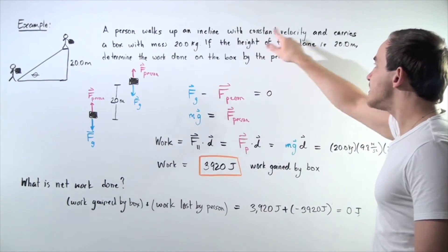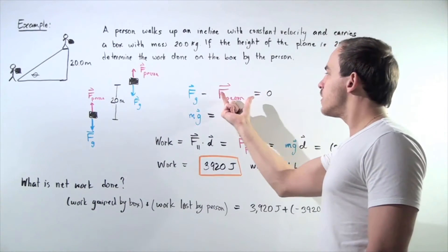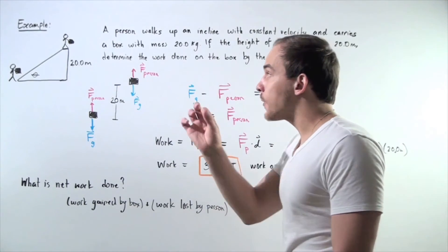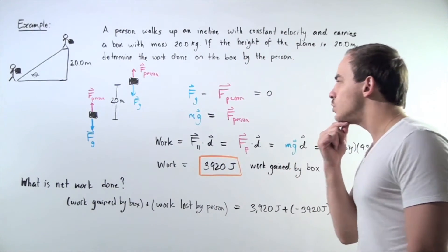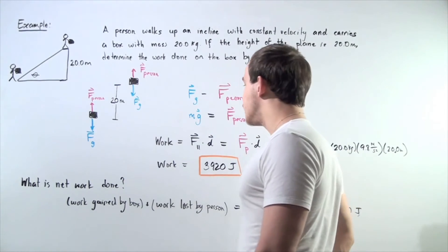So we solve for this force and we see that the force created by the person on the box is equal to m times g, mass of the box times the gravitational constant g.